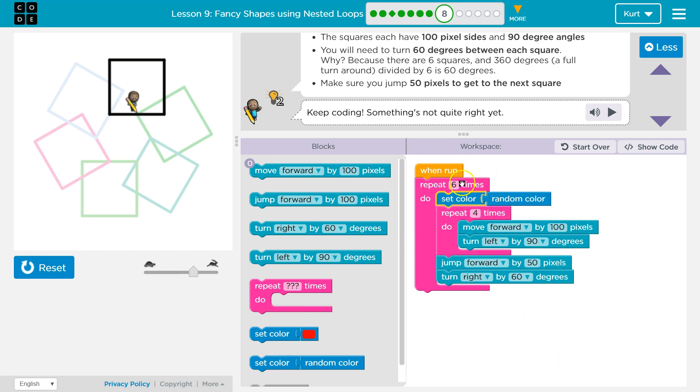What's going to happen now? When I hit run, the computer says, okay, run all of this code in between six times. So all of this needs to run six times. Set color random. It picks a color. It then says, oh, I need to run this four times. All right. Move forward 100. Turn left.